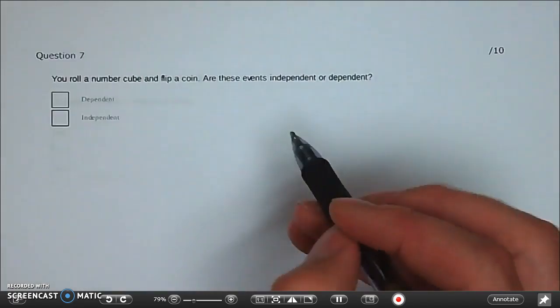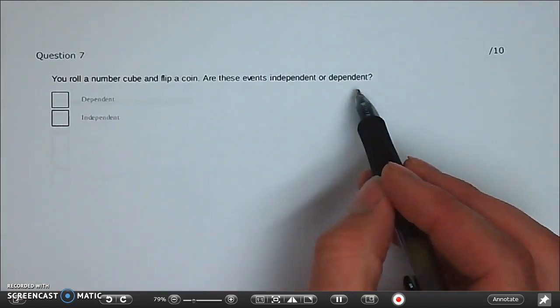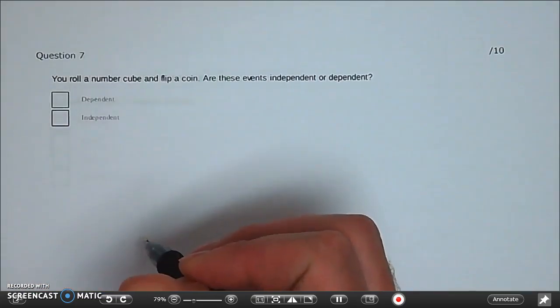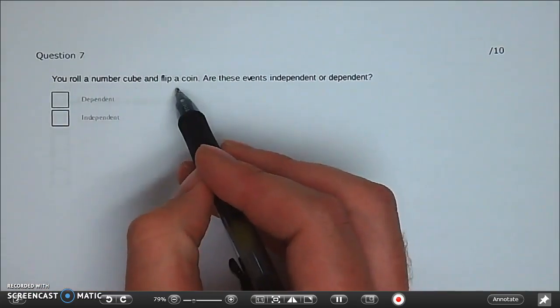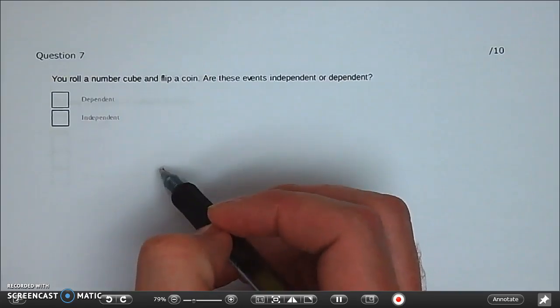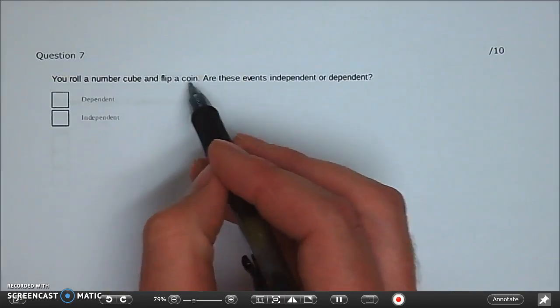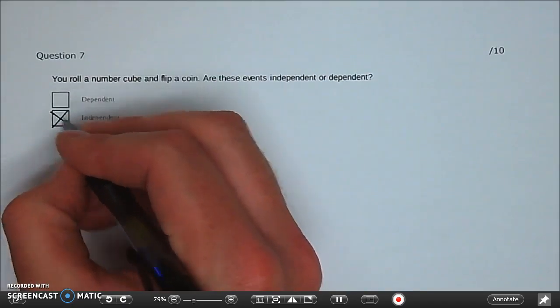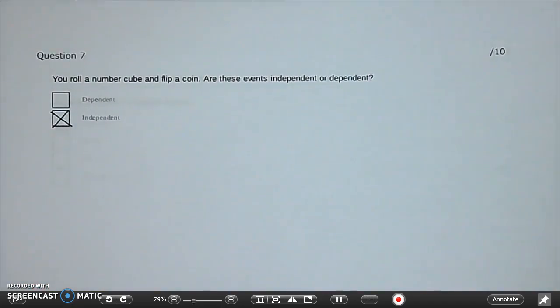Question seven. You're rolling a number cube and you're flipping a coin. Are these events independent or dependent? You have to roll a number cube. Is that going to impact what you get when you flip a coin? No. You can still get heads or tails if you just roll a number cube before that. So those are independent events. They don't depend on one another.